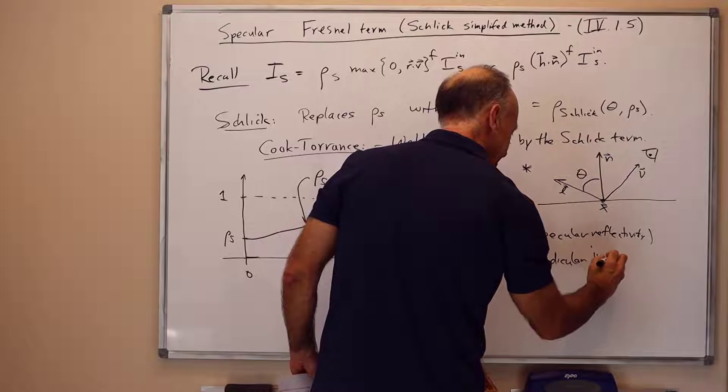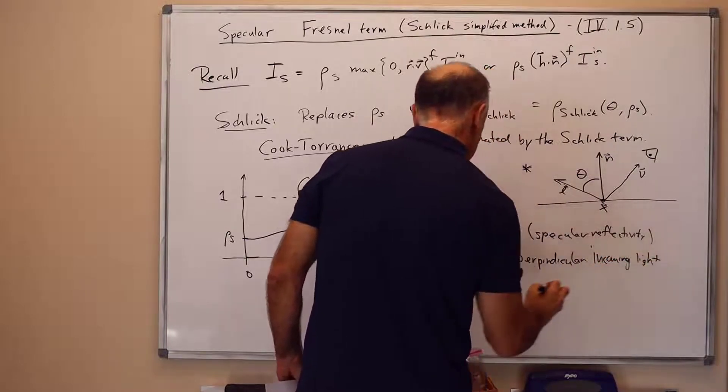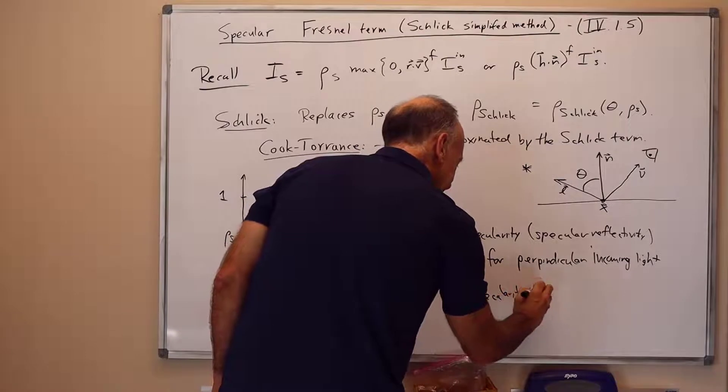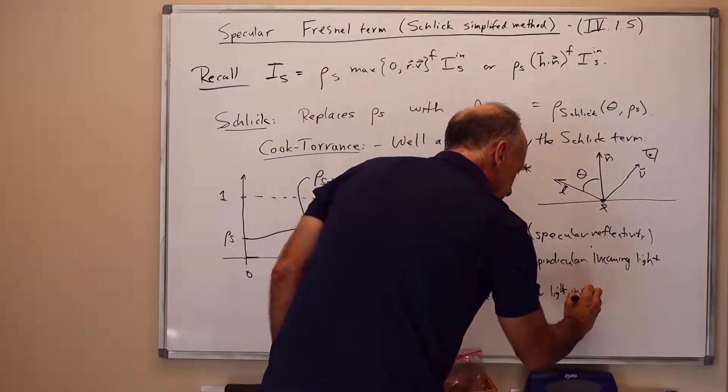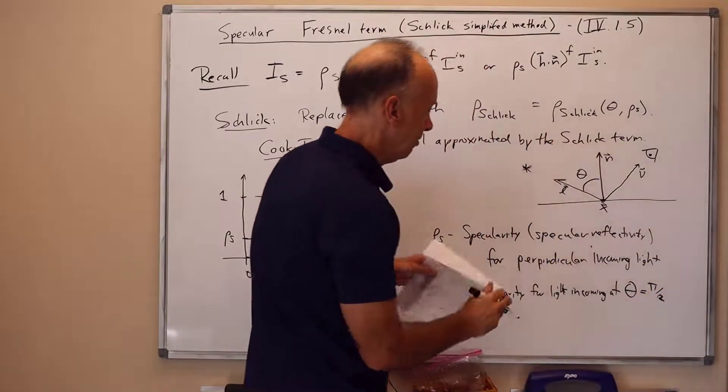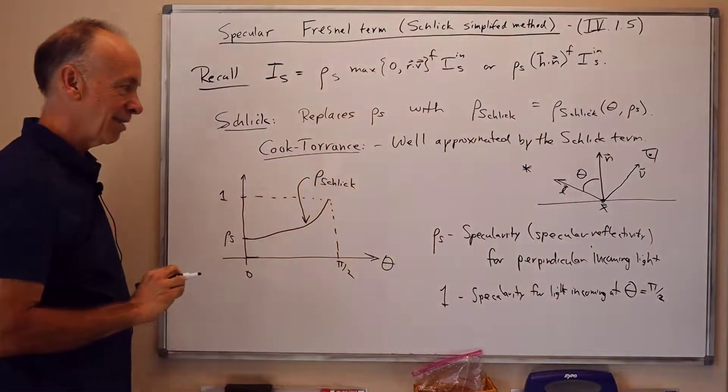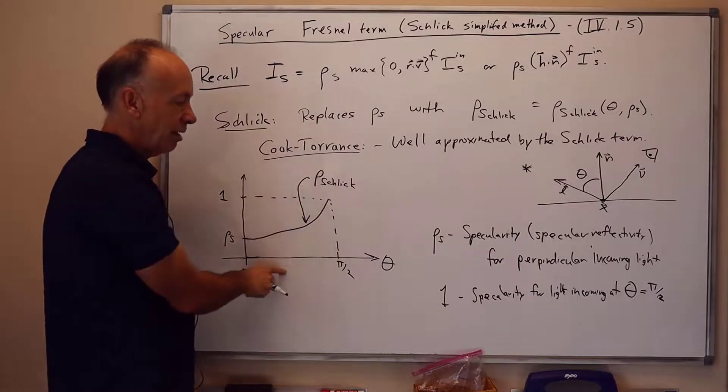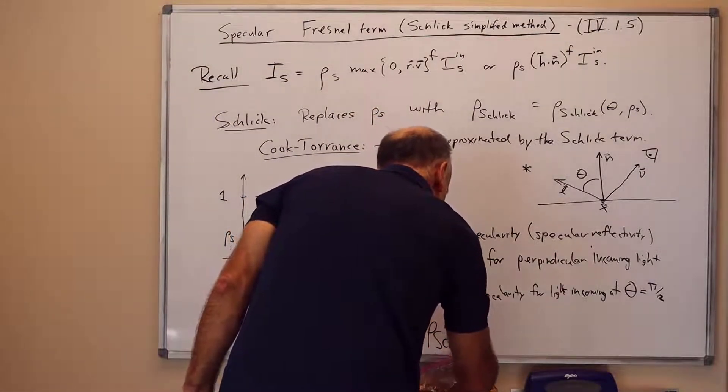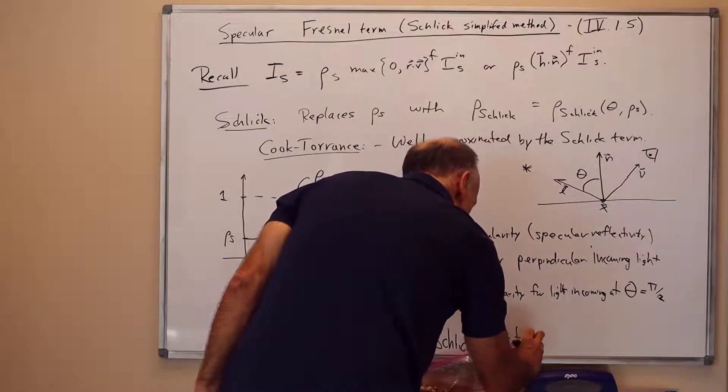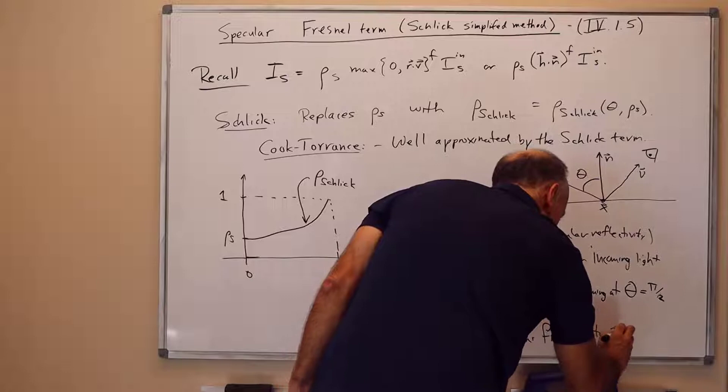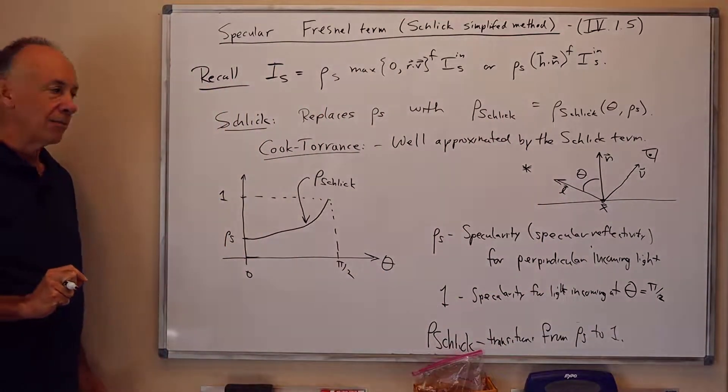So rho s is the specularity or the specular reflectivity for light that's coming straight down onto the surface. So this will be the specularity for theta equals pi halves for perpendicular light. Perpendicular incoming light. For 1 will be the specularity for light coming in at theta equals pi halves. Which means the light is coming in directly horizontally onto the surface or extremely close to that. The rho Schlick function controls the transition between these two values. Transitions from rho s to 1. Roughly as shown in this graph here. And I'll give you the formula for this in a moment on the next board.